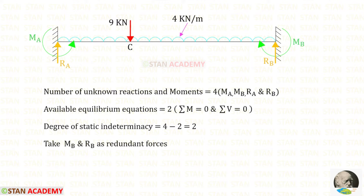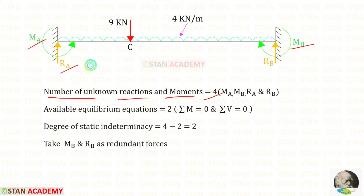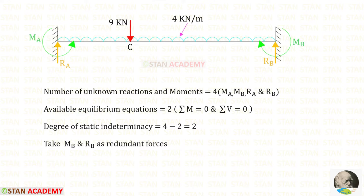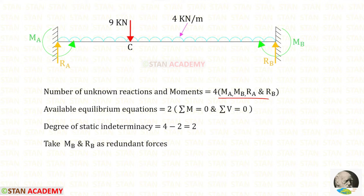Now let us find the degree of static indeterminacy. In this beam the number of unknown reactions and moments are 4: the moments Ma and Mb, and the vertical reactions Ra and Rb. The available equilibrium equations are 2. The degree of static indeterminacy equals 4 minus 2, which gives 2. From these 4 unknowns, let us take Mb and Rb as redundant forces.